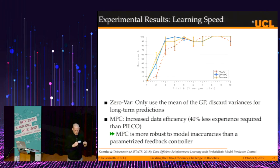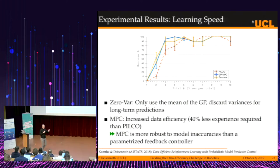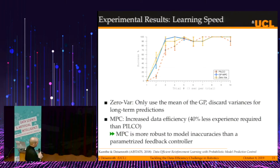Running this on the cart-pole system in simulation, I want to look at two things: learning speed in an unconstrained setting and in a constrained setting. The red method — the one introduced earlier — gets to about 90% success rate after five trials, around 15 seconds, with each trial three seconds long. The zero-variance method ditches the Gaussian process uncertainty and runs a deterministic system. With model predictive control, this actually works — in the other setting it does not.